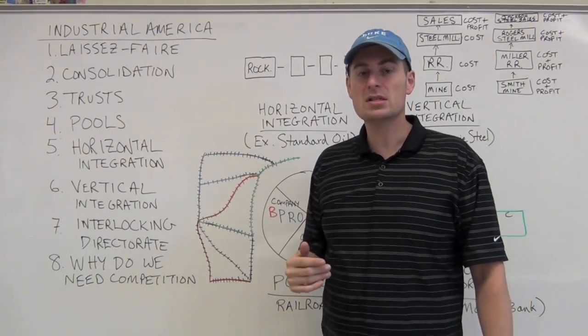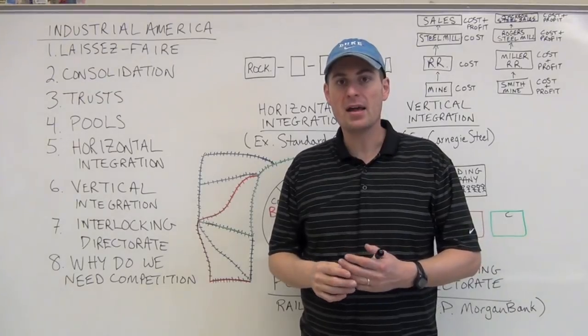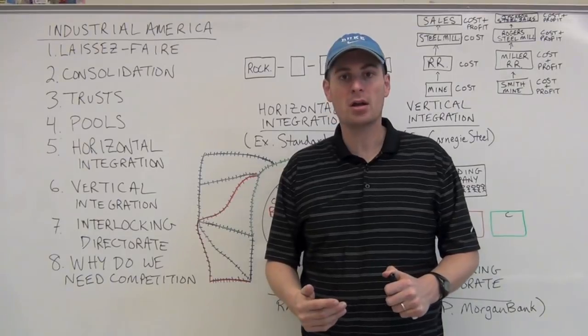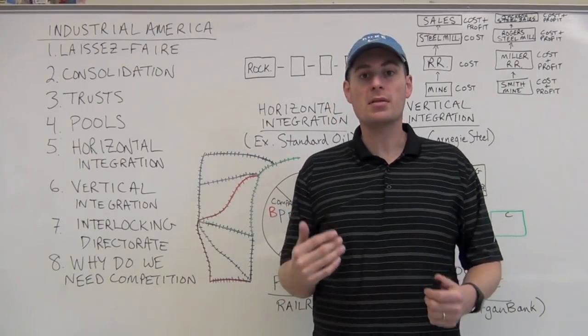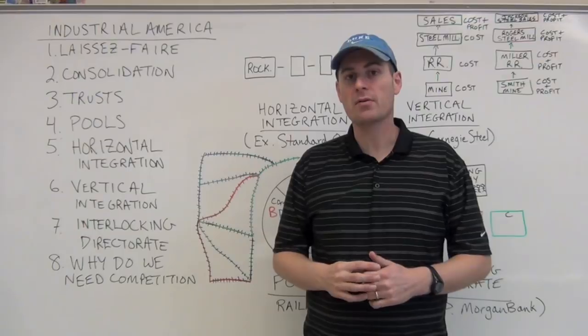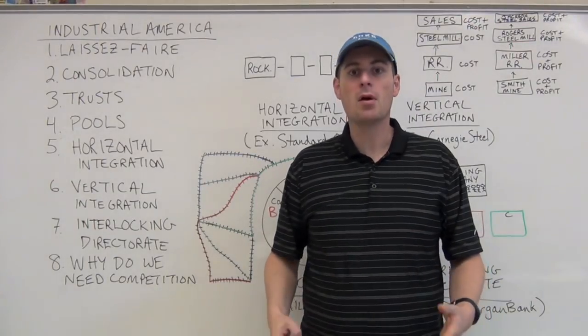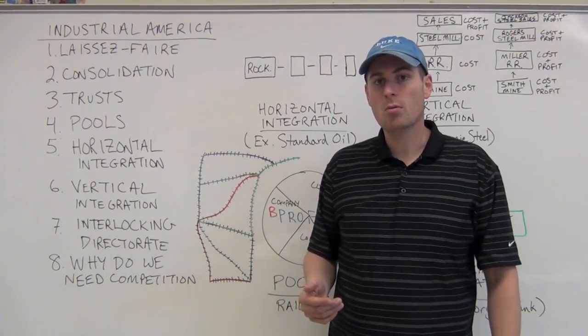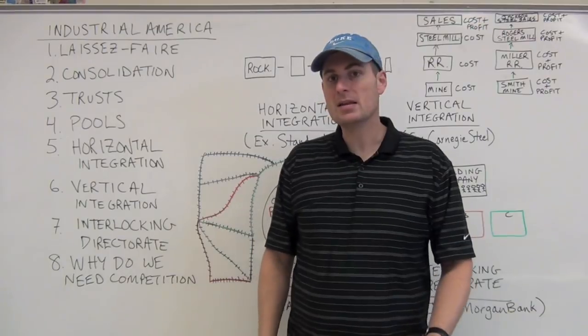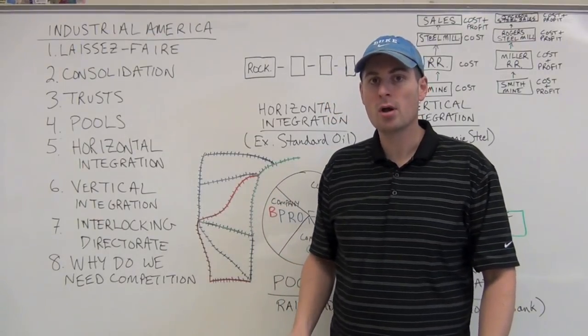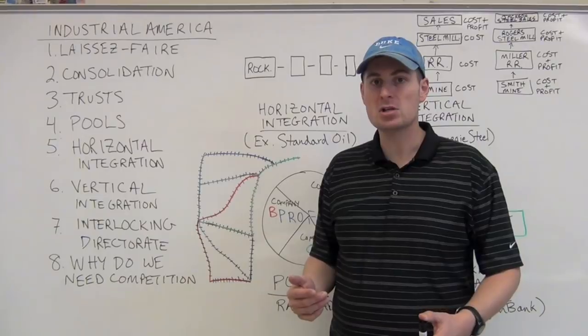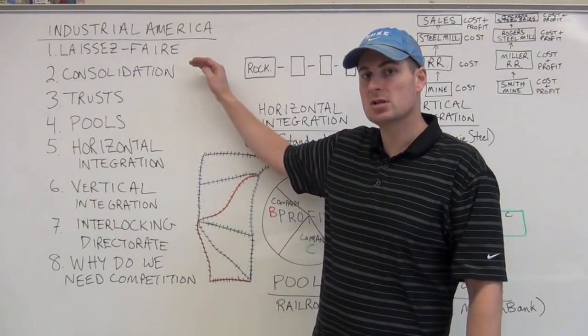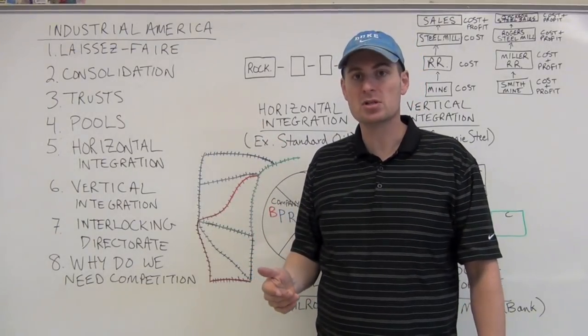Consolidation. Giving you a bit of background: we had early industrialization, these fledgling American companies getting going mainly in textiles, later spreading to other fields, and they needed tariffs to protect them from already established British manufacturers. By the time you get to the mid-1800s and the Civil War, you really have a modern industrial nation emerging.